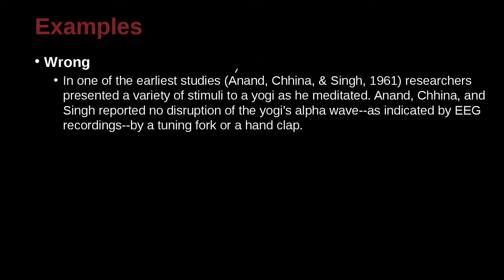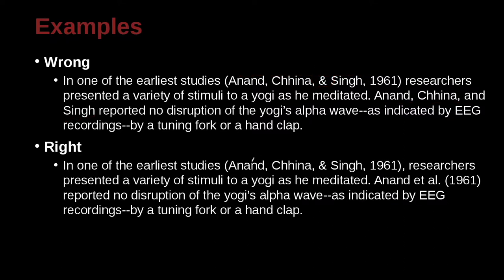The point here is we have a reference up here which looks good. You can see the ampersand is used — not A-N-D. Then we have the same paper cited again down here. Do you remember the special rule that applies? The first time we list the authors, we list them all, but the second time we can use 'et al.' because it's three or more authors. So we have 'et al.' and the date.